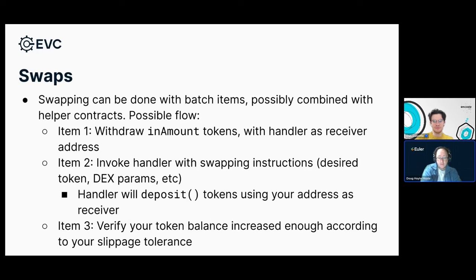The EVC is quite flexible — we don't actually have to encode any sort of swapping logic anywhere in our systems. Vaults don't need anything special for swapping, and the EVC doesn't either. The way the multicall system works, potentially combined with what we call helper contracts, is sufficient for any sort of swapping, wrapping, or other things you might need to do inside a nested batch.